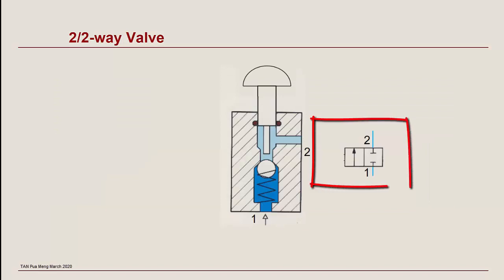This is the pneumatic symbol of the 2 2-way valve at its initial position as indicated by the lines outside the right square. Since there are two switching positions, two squares are used to represent the two switching positions. Each square has two ports on the horizontal edge of each square as shown the right square and left square.